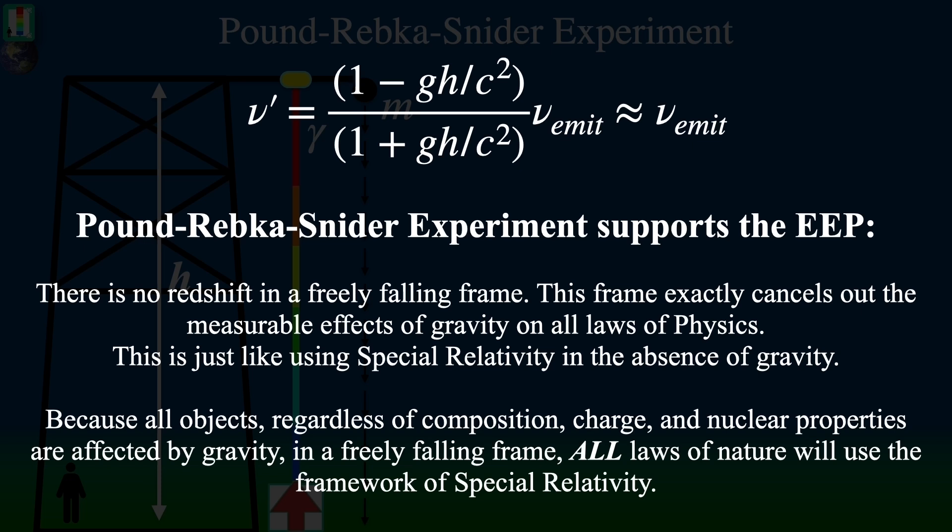And this is what we mean when we say that the Pound-Rebka-Snyder experiment strongly supports the Einstein equivalence principle. There is simply no measurable redshift in a freely falling frame. Within an accelerating freely falling frame, this exactly cancels out the measurable effects of gravity on all laws of physics. It's just like using special relativity in the absence of gravity.